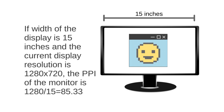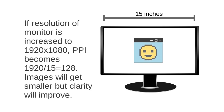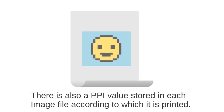This is the PPI. The resolution is 1920x1080. This is the PPI for that resolution. Now you can print a paper at the correct size using this PPI value.